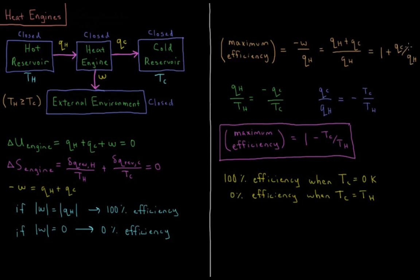Now let's determine what this ratio needs to be. We know that the entropy change of the universe must be greater than or equal to zero. From this constraint, QC over QH equals minus TC over TH. Substituting into our maximum efficiency expression, the maximum efficiency of our engine is 1 minus TC over TH — 100% minus the ratio of the cold reservoir temperature to the hot reservoir temperature.